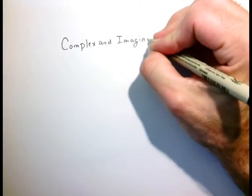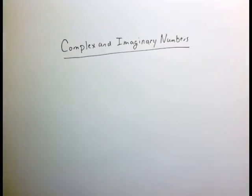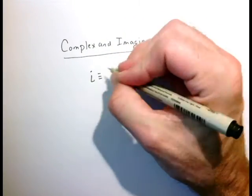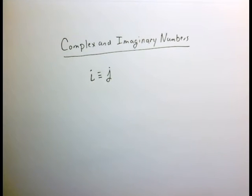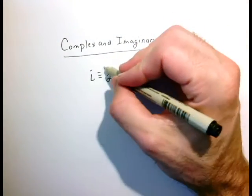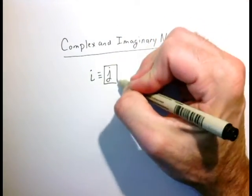Today we're going to introduce complex and imaginary numbers. Let's start with some simple definitions. The imaginary unit number i is what you may have seen before. We're going to use the symbol j because we're going to do a lot of circuit analysis, and in circuits, i is often used for current. So to avoid confusion, we're going to use j.